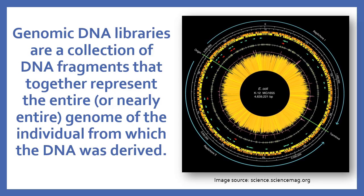Genomic libraries are a collection of DNA fragments that together represent the entire or nearly entire genome of the individual from which the DNA was derived. A genomic library represents the complete genome in multiple clones containing small DNA fragments. Depending upon the organism and the size of the genome, this library is either prepared in a bacterial vector or in an artificial chromosome.